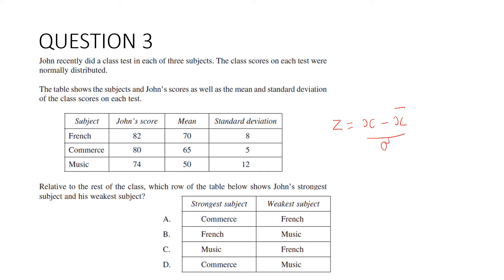Let's start off with French. His score is 82. We're taking off 70 and dividing by 8. If I just do that really quickly on the calculator, I'm getting 12 divided by 8. Probably don't need to use the calculator. It's 1.5.